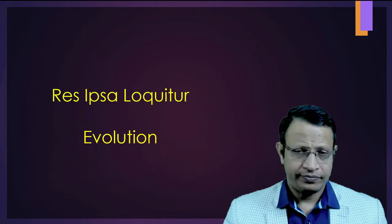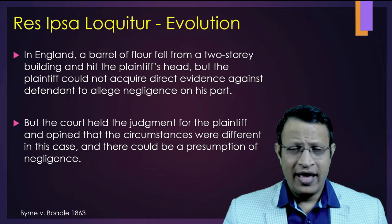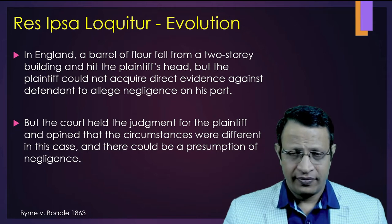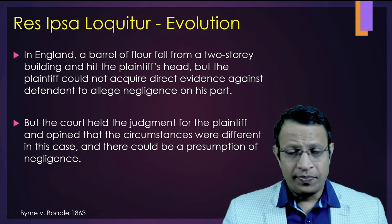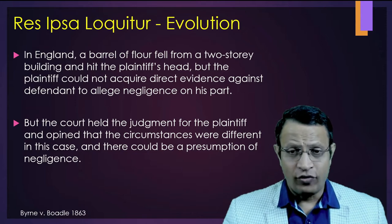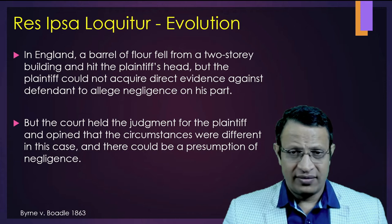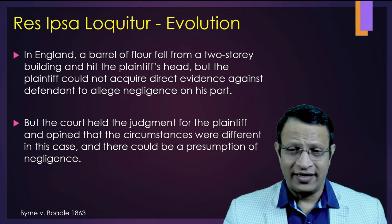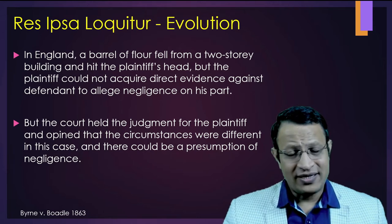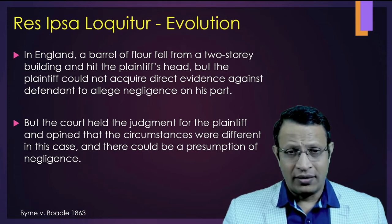Let's understand how this doctrine evolved. In England in 1863, a person was walking down the street when a barrel of flour fell on his head from a two-story building. The injured person knew the barrel came from the second floor but was unable to pinpoint who was responsible. Although there was no direct evidence, he went to court claiming that the flour factory was responsible.